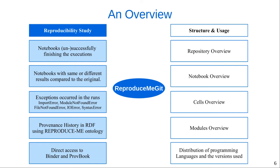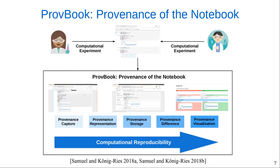The tool provides direct access to Binder and ProveBook. Binder is an open source web service provided by Project Jupyter to create shareable, reproducible environments for Jupyter notebooks in the cloud. ReproduceMeGit also provides an export feature supported by ProveBook to capture the prospective and retrospective provenance in RDF, described by the ReproduceMe ontology.